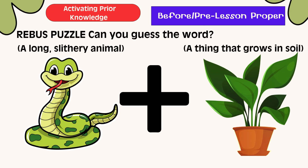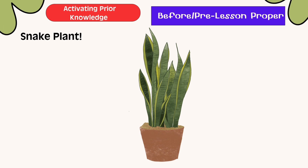Rebus Puzzle — Can you guess the word? We have here a long, slithery animal, a last sign, and a thing that grows in soil. What is it? Correct! It is a snake plant.